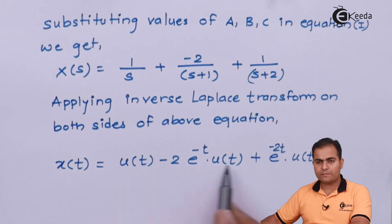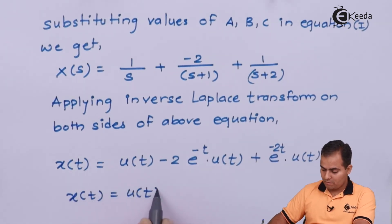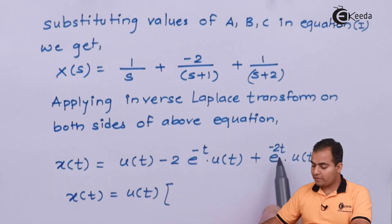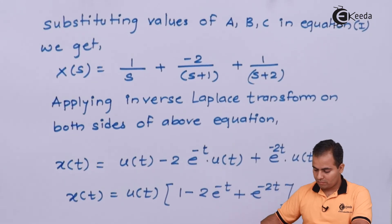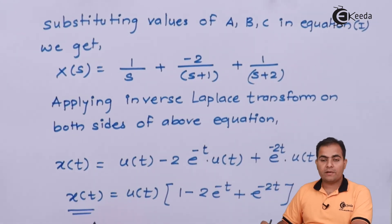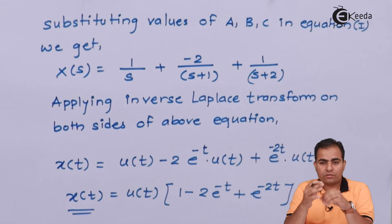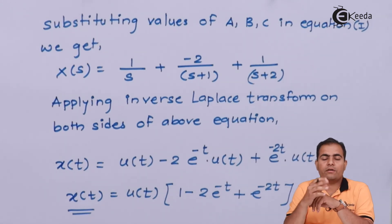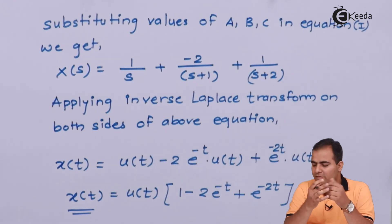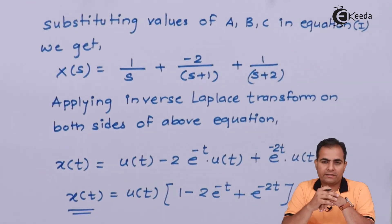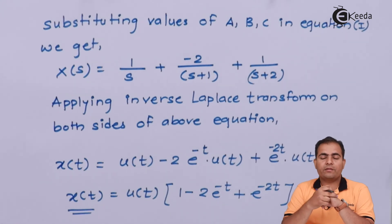If you want, you can take unit step common from all the equations. The final result is X of T equals [1 minus 2e⁻ᵀ plus e⁻²ᵀ] times unit step. This is our inverse Laplace transform of the function. Simple pole numericals are quite simple to solve, but if you move towards multiple pole or complex conjugate poles, you may face some difficulties. We will study the next numerical in the next video. Stay tuned with Ekeda and subscribe for further more videos. Thank you.